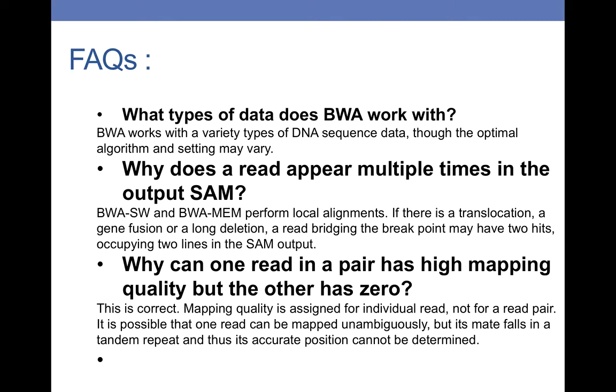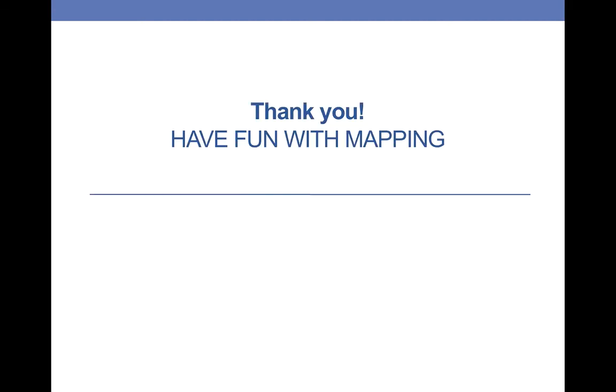Why does a read appear multiple times in the output SAM file? Well, this could be due to some translocation, a gene fusion, or long deletion. Why can one read in a pair have high mapping quality but the other has zero? Is it a mistake? No, actually it's correct because the mapping quality is assigned for individual reads, not a read pair. And that's all about it. Thank you for listening. Have fun with bioinformatics.